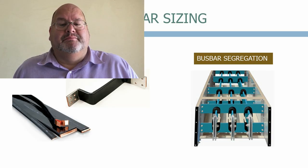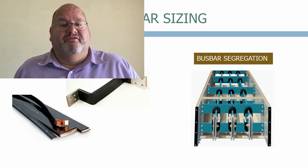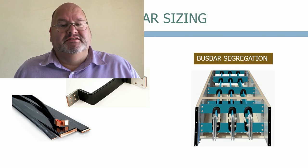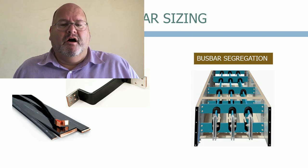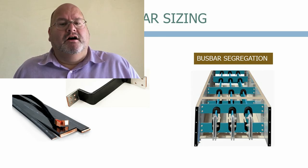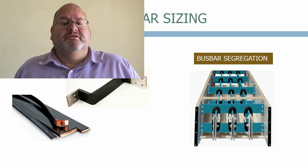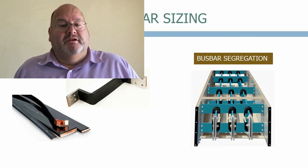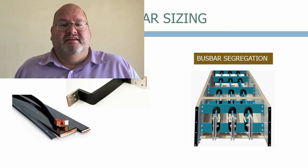Transformers are designed to have a defined impedance, as network operators need to know what the fault currents produced by the transformers are. If you want a low fault current, you design the transformer to have a high impedance, and vice versa. There are obvious limitations to the impedance you can achieve in transformer design, as it also depends on its configuration and the materials used, and it may be too expensive or impractical to make a transformer with the desired impedance. Generally, larger transformers on a transmission network naturally tend to have a lower impedance than smaller distribution transformers.